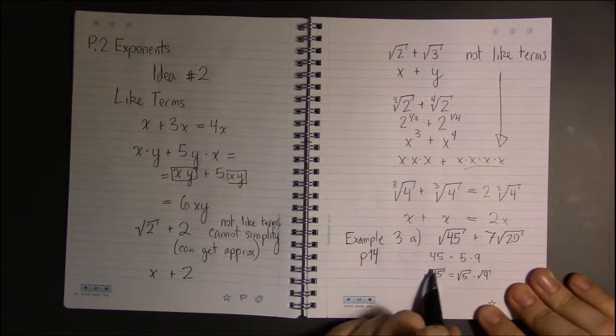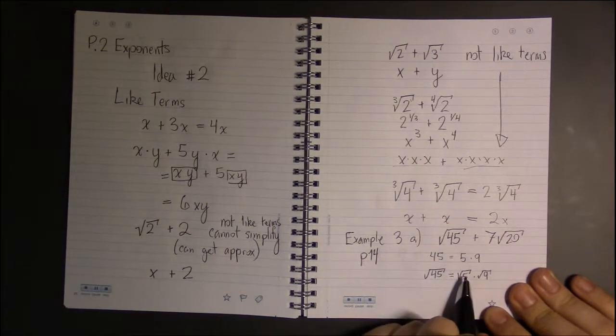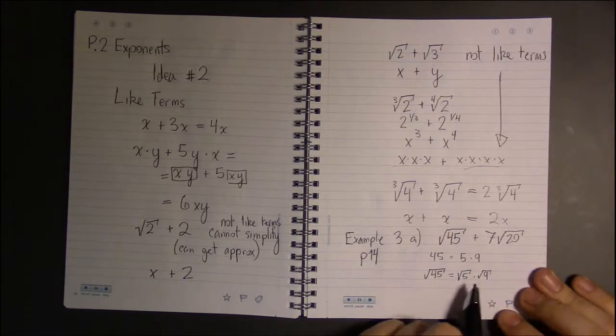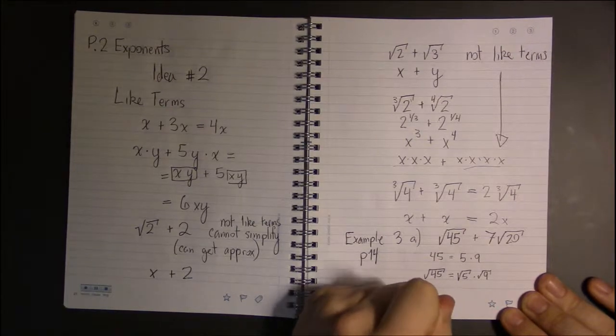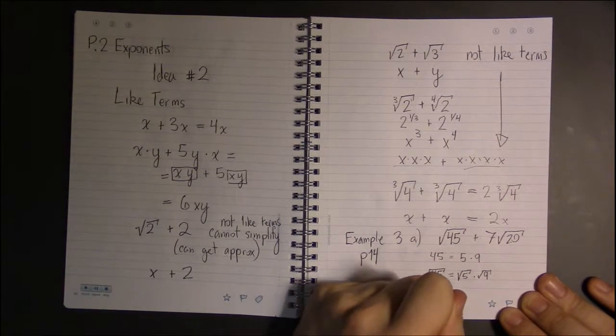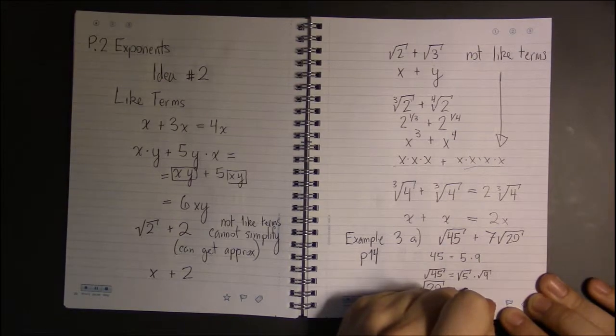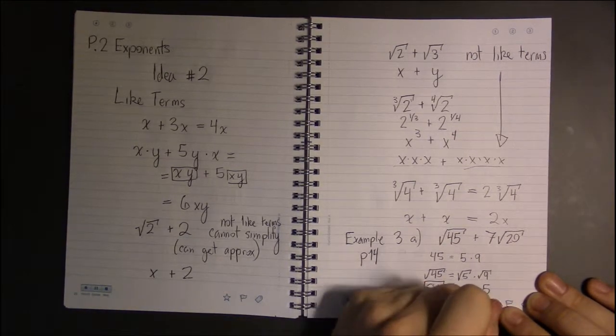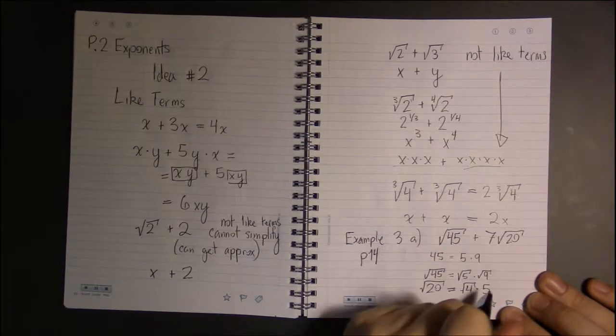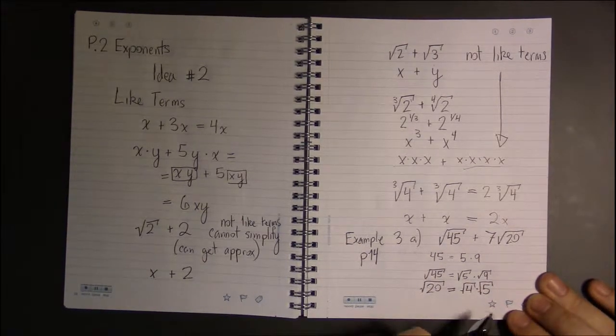Because square roots are just an exponent and exponents play nice with multiplication. They kind of distribute. Well, the same thing is true with 20. The square root of 20, 20 is just 4 times 5, so the square root of 20 is the square root of 4 times the square root of 5.